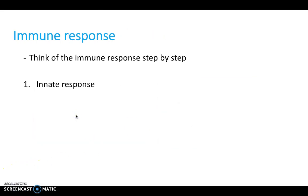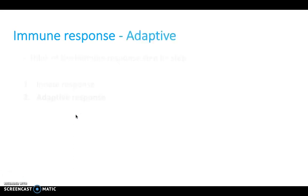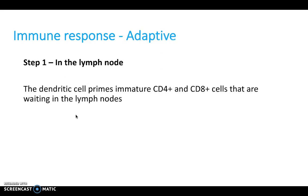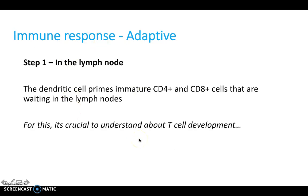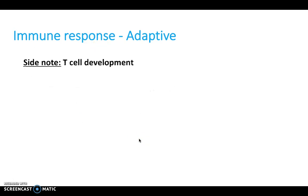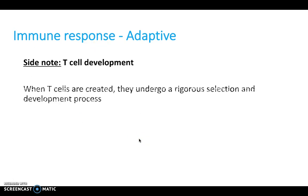That's a summary of the innate response. Now let's take a look at the adaptive response — this more lethal, fast-acting response. In step one, the dendritic cell primes immature helper and killer T cells waiting in the lymph nodes. For this, it's crucial to understand T cell development. T cells undergo a rigorous selection and development process, and only a quarter of T cells produced survive.